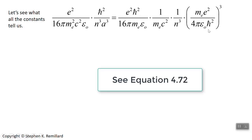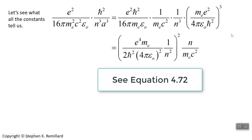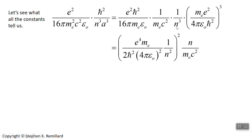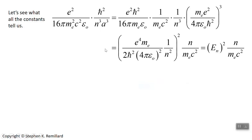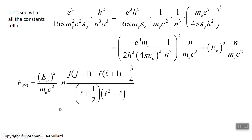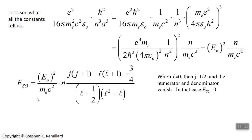So E sub N squared times N over m_e c squared is what all these constants add up to. Putting that back into the expectation value of the perturbation Hamiltonian, it goes in front, and combined with everything else gives the result shown in the red box. You might notice that if L equals zero, we have a problem — the denominator is zero. So for S states, it seems there's a singularity and the spin-orbit coupling has infinite energy. But look at the numerator as well: when L equals zero, J must be one-half, because J goes from L minus S up to L plus S. So the numerator is also zero, and in fact the spin-orbit energy equals zero when L equals zero.